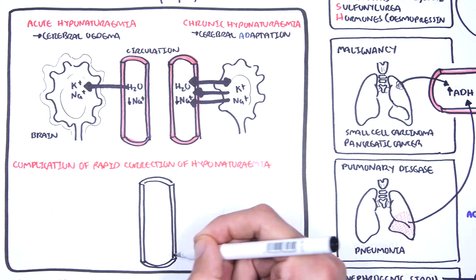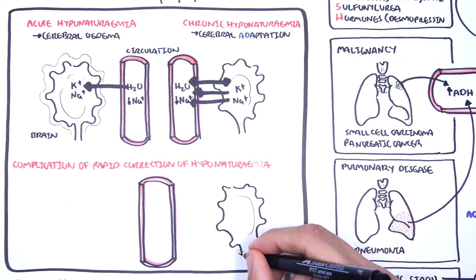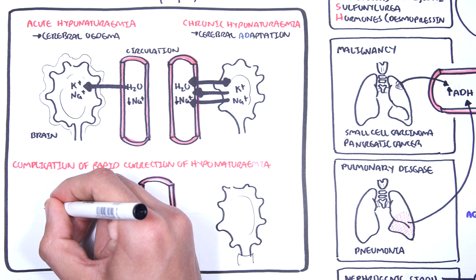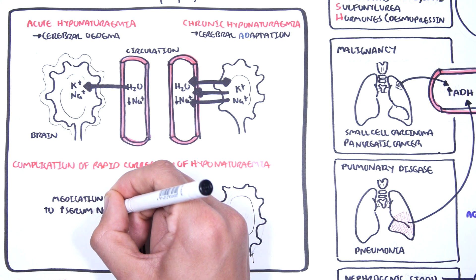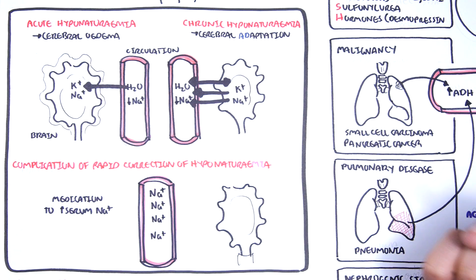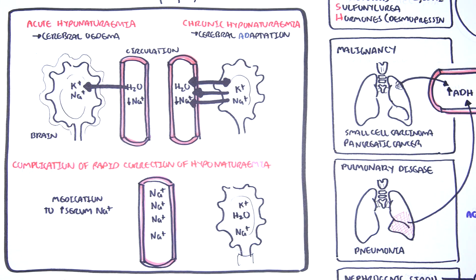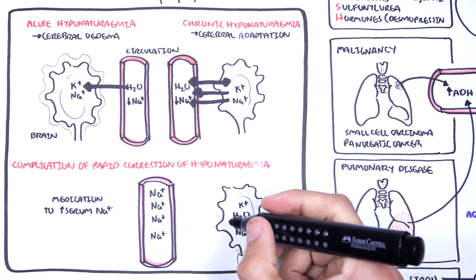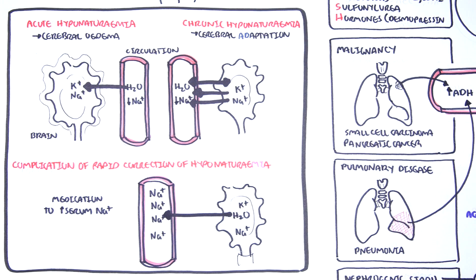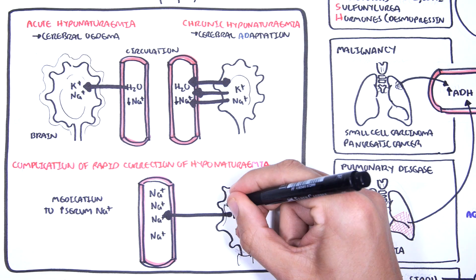So, imagine you are using medications, fluids, to increase serum sodium rapidly. This means you suddenly get all this sodium in circulation. Remember, water follows sodium. So, what you get is water from the brain, for example, escaping into circulation because of the osmotic gradient.